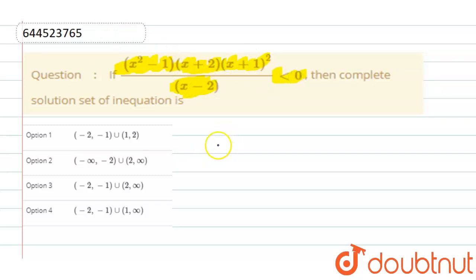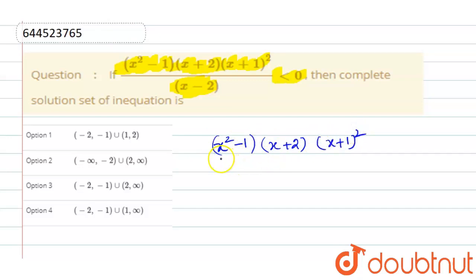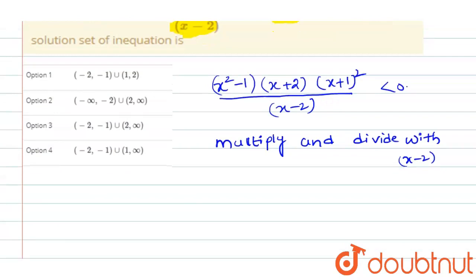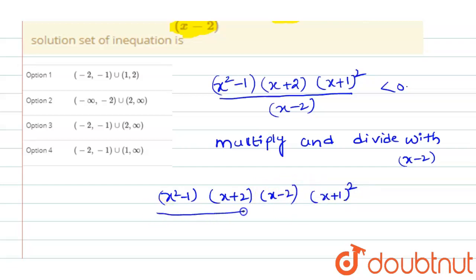We can see that (x² - 1)(x + 2)(x + 1)² / (x - 2) is less than 0. So we multiply and divide by (x - 2), giving us (x² - 1)(x + 2)(x - 2) · (x + 1)² / (x - 2)² is less than 0.